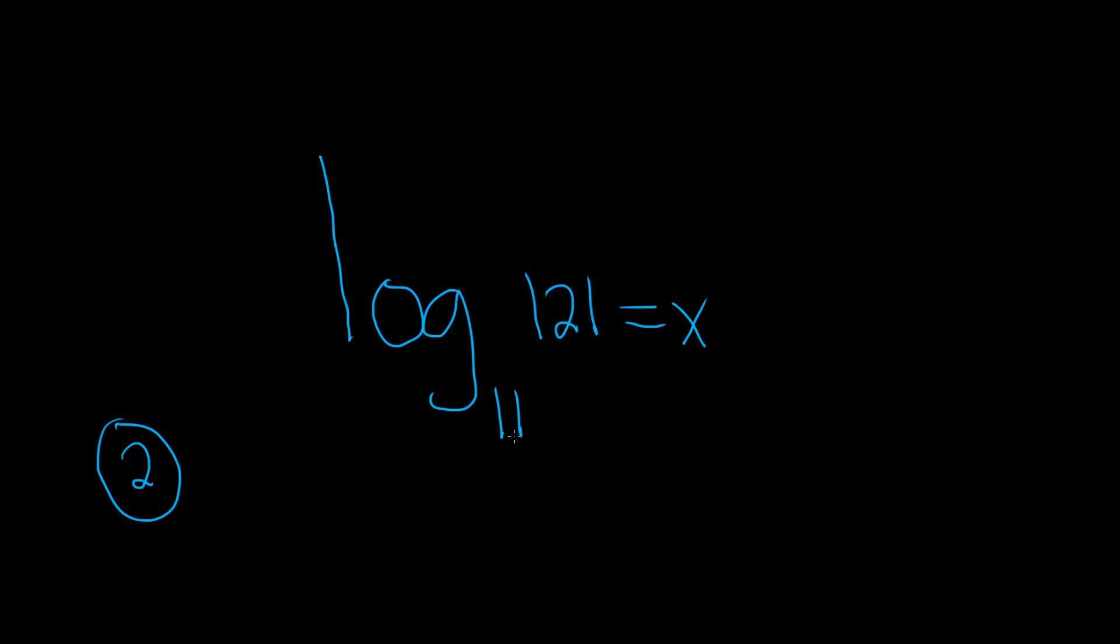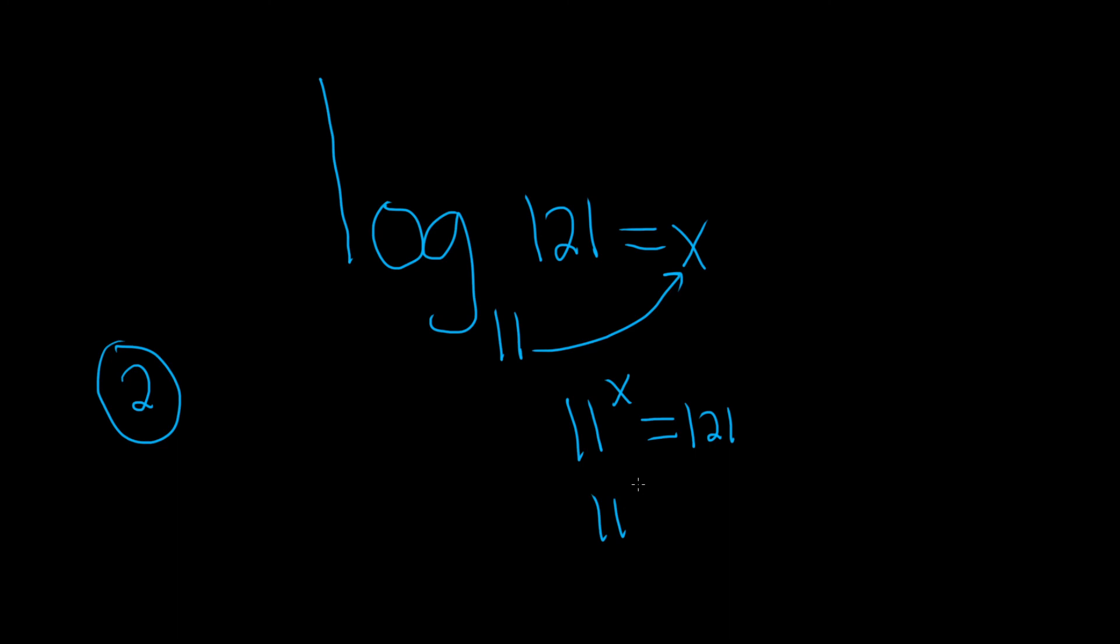And you can still ask the same question. 11 to what power is equal to 121? So 11 to the x is equal to 121. And then you can realize that you can write 121 as 11 squared. So we have 11 to the x equals 11 squared.